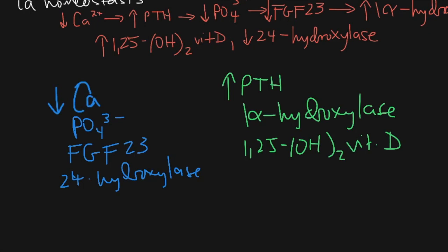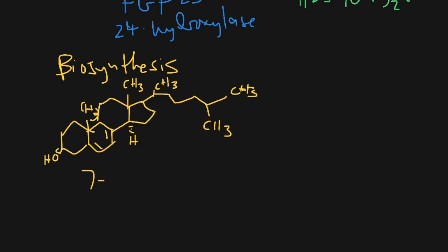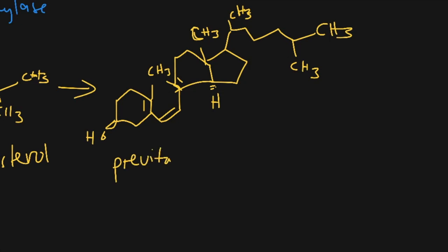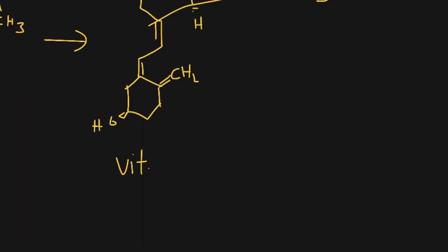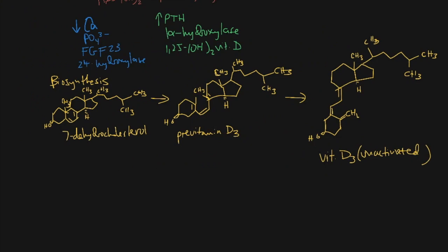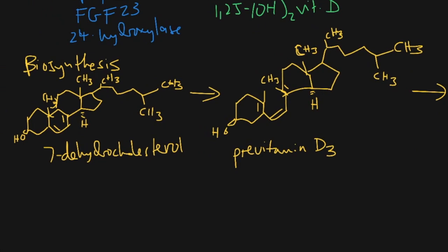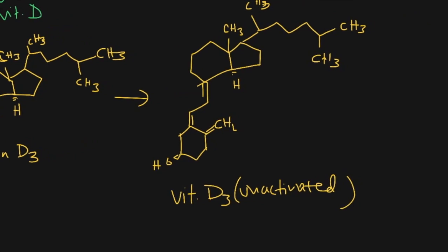One major player in calcium homeostasis is vitamin D. The biosynthesis pathway of vitamin D3 involves two steps: starting with cholesterol, you get pre-vitamin D3 — basically the same as cholesterol except it has a hole in it — and then you get the final unactivated vitamin D3 product. Remember: start with a full cholesterol, make a hole, you get the second product, then to get vitamin D3 it looks totally different from the intermediate.